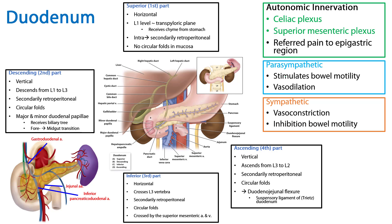So we've discussed the duodenum: its relationship to other viscera, its relationship to the peritoneum, its parts, the features of those parts, its blood supply, and its innervation. This is your summary slide. Thank you for your time.